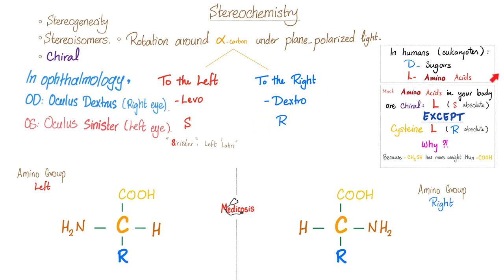Here is a very important tip: when you're talking about human beings or eukaryotes, you have the D sugar but the L amino acid. The sugars in your body are D, which means they are rotating to the right — when you shine plane polarized light on them, they will rotate it to the right. But your amino acids will rotate the light to the left. So in your body, with sugar it's always D, but with amino acids it's always L.